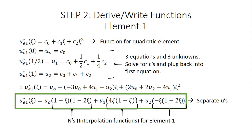The second step in the process is to derive or write the functions for each of our elements. Beginning with element 1, the equation we use for quadratic elements is u^e1(z) = c0 + c1*z + c2*z². We plug in each of the three node locations for element 1: located at 0, 1/2, and 1, which are equal to the displacements u0, u1, and u2 at those nodes.